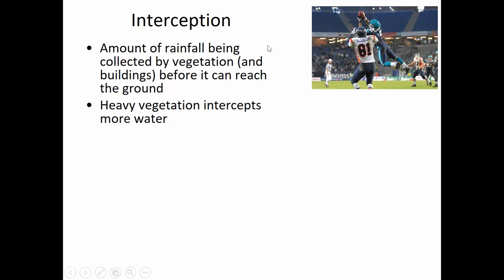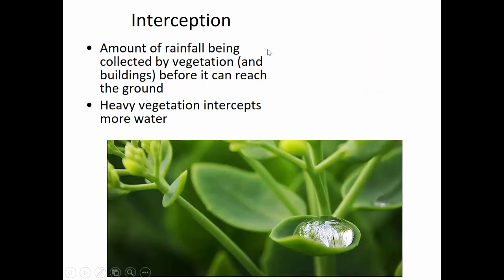Interception — not the football kind — is how water sometimes comes into contact with things before it hits the ground. It may be plant surfaces, buildings, power lines, any sort of thing up in the air that's going to interfere with the water's path down to the ground. Sometimes it can be a pretty substantial fraction of the overall rainfall.